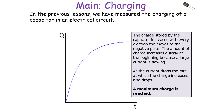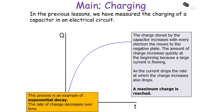The charge stored by a capacitor increases with every electron that moves to the negative plate. The amount of charge increases quickly at the beginning because a large current is flowing. As the current drops, the rate at which charge increases also drops, reaching a maximum charge. Once again, this is an example of exponential decay — the rate of increase decreases over time.